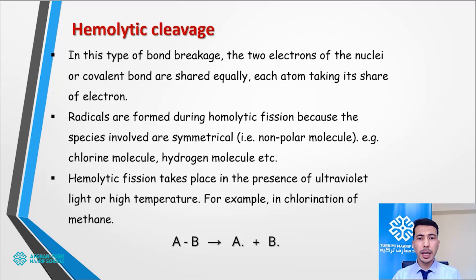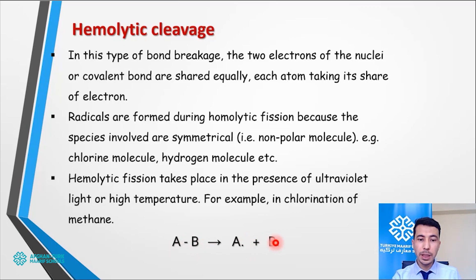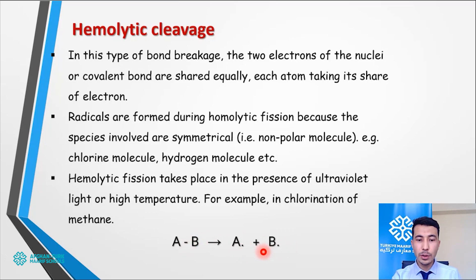What are radicals? Radicals are atoms — not ions — which have an empty orbital. They are very reactive but do not have any positive or negative charge. For example, atoms A and B have a bond between them. When this bond is broken, we know that one bond represents two electrons. So A takes its own share of one electron and B takes its own share of one electron. Now these two atoms are very reactive and are known as radicals. A radical could be polyatomic, diatomic, or monoatomic.